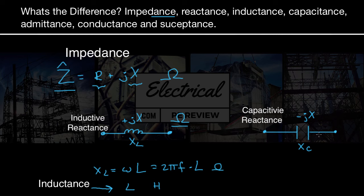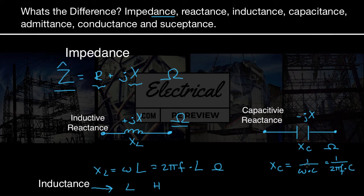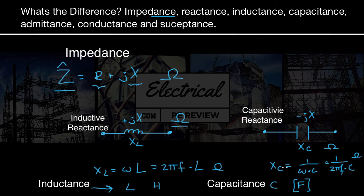Just like inductive reactance, capacitive reactance X of C — in ohms — is found from capacitance. This time it's 1 over ω times C, or 1 over 2πF times total capacitance in farads. So while X of C, our capacitive reactance, is still in ohms, C is our total capacitance in farads. We use capacitance to calculate capacitive reactance. Don't let those two terms confuse you — that's where most people make the most common mistakes.